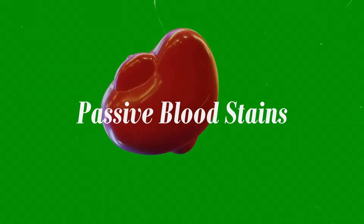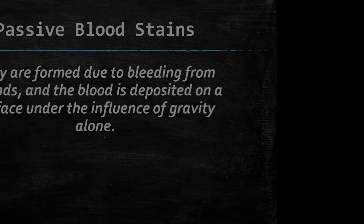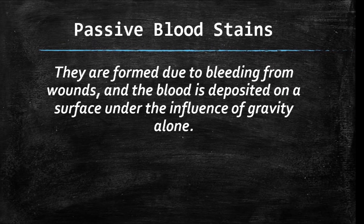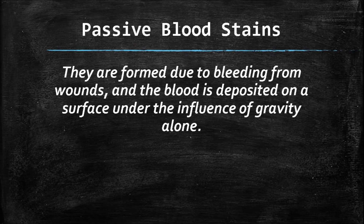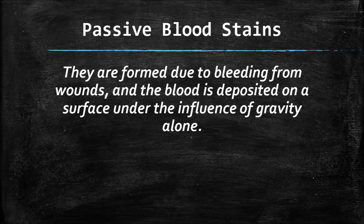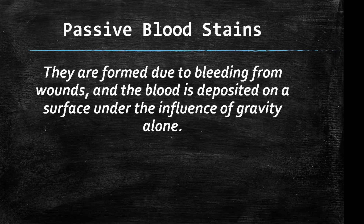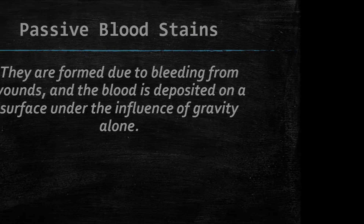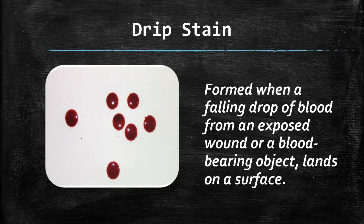Passive bloodstains are formed due to bleeding from wounds, and the blood is deposited on a surface under the influence of gravity alone. For example, a drip stain is formed when a falling drop of blood from an exposed wound or a blood-bearing object lands on a surface.